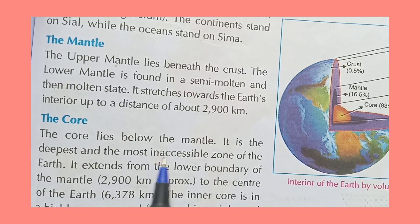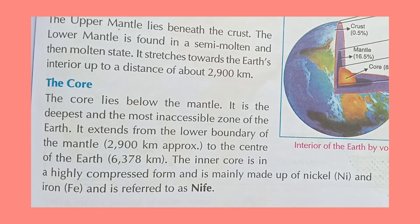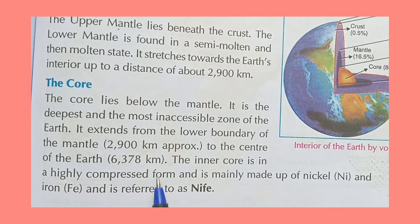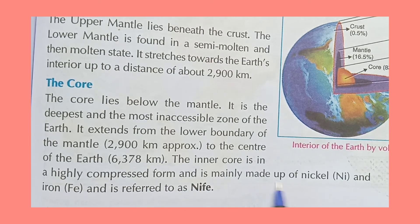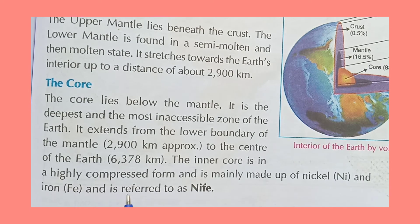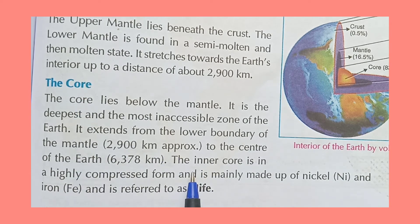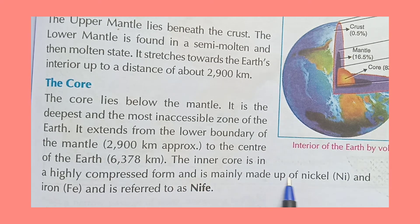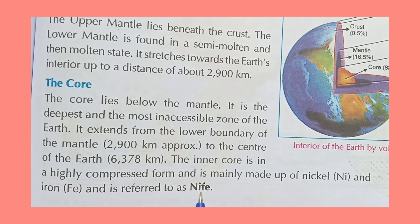The core is the inaccessible zone. The core is divided into two parts: the outer core and the inner core. The inner core is in a highly compressed form and is mainly made up of nickel and iron, referred to as Niphe (Ni + Fe). So the inner core is made of two types of material: nickel and iron.